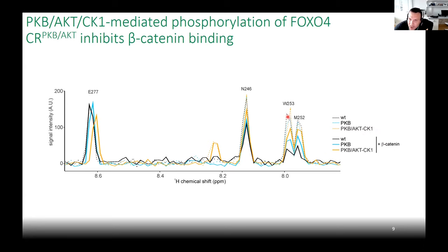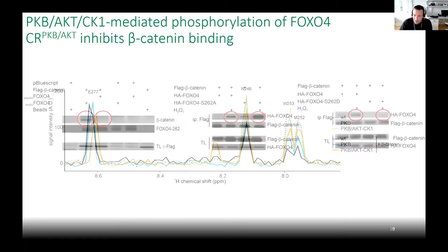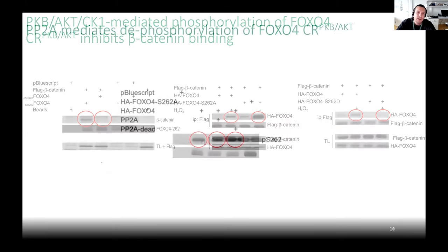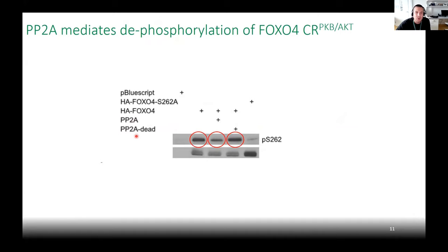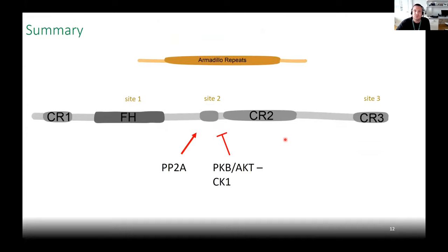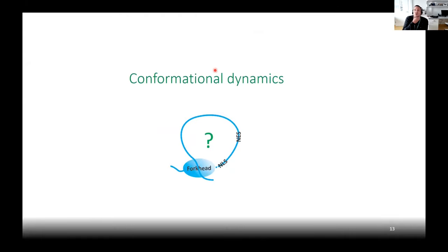Using commercially available recombinant kinases, we found that CK1 alone did not phosphorylate this FOXO4 region, whereas PKB alone recapitulated phosphorylation of S262. When both kinases were added together, we recapitulated all three phosphorylation sites — S262, S265, and S268 — showing that PKB phosphorylation of S262 is a priming event for CK1-mediated phosphorylation of S265 and S268.